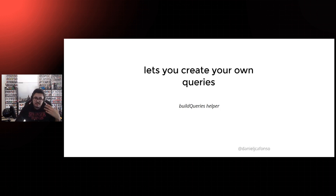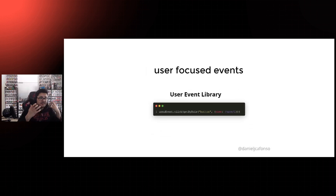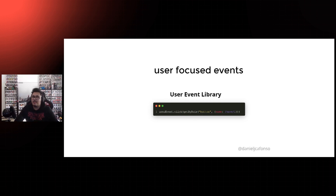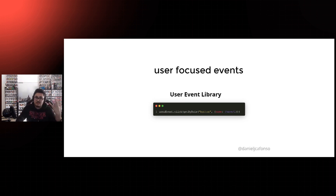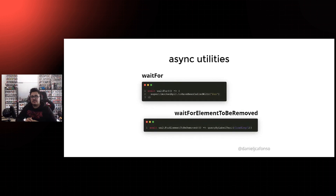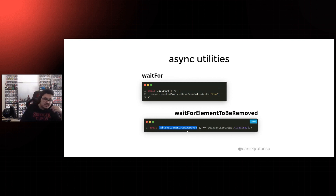It also gives you the possibility to create your own queries using the buildQueries helper — which is super great, but you have to be careful not to expose implementation details. It allows you to have user-focused events using its companion library called the user-event library, which lets you interact with DOM elements the exact same way a user would. For instance, for a button click, it simulates all the events that typically happen when you click a button. And then it gives you a bunch of asynchronous utilities for waiting for something to appear on the DOM, waiting for something to have been called, or waiting for something to be removed, so you can then do your assertions.